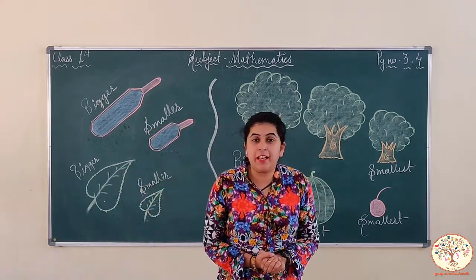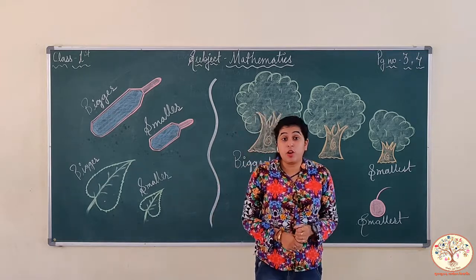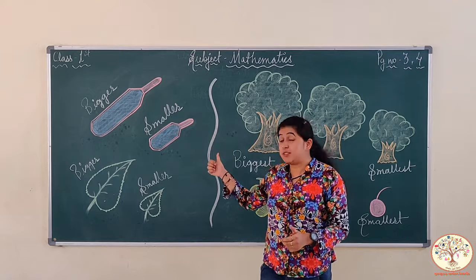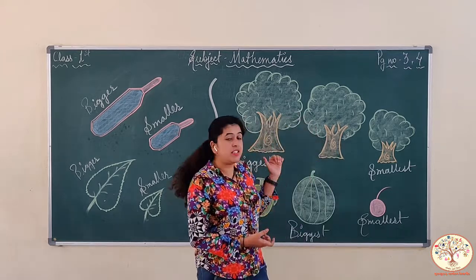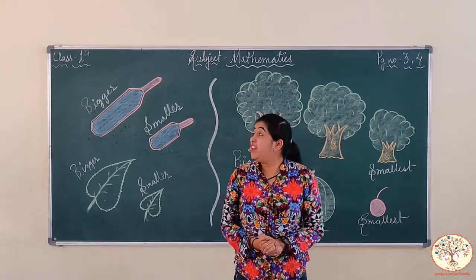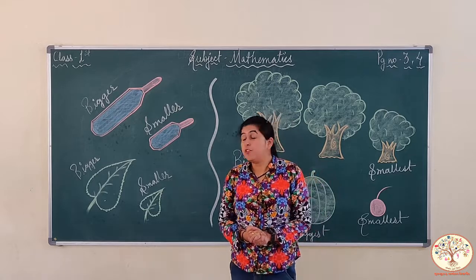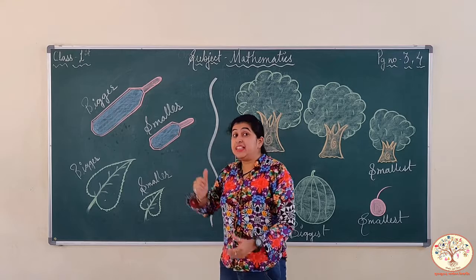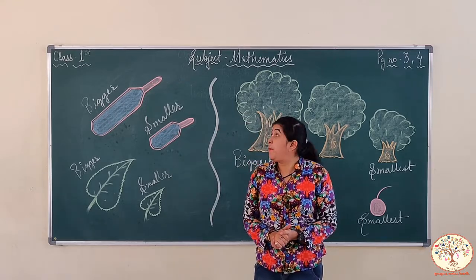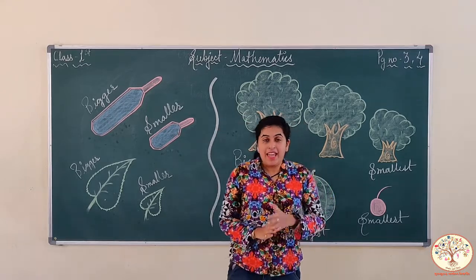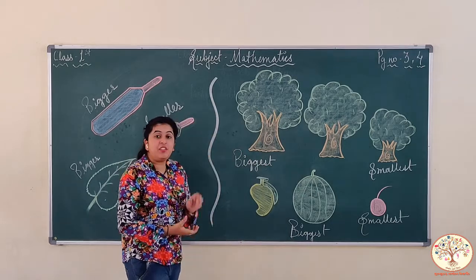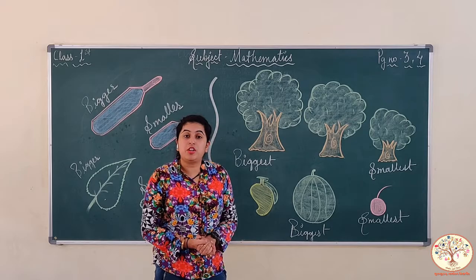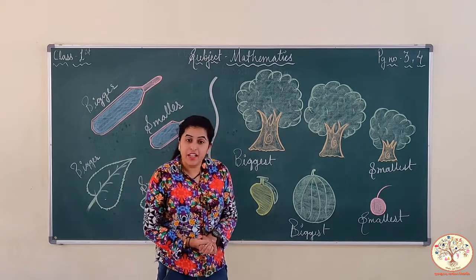Kids, what we have learnt today — we have learnt about two concepts. The first one is bigger and smaller, and the second one is biggest and smallest. In bigger and smaller, we have learnt that when we compare one object with another, we use the concept of bigger and smaller. And when we compare three or more objects, then we use the concept of biggest and smallest.